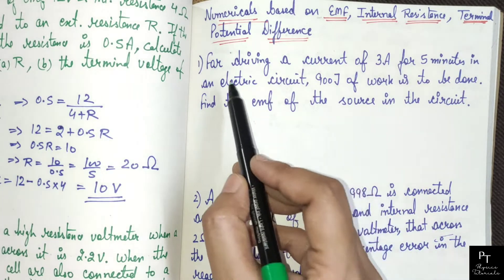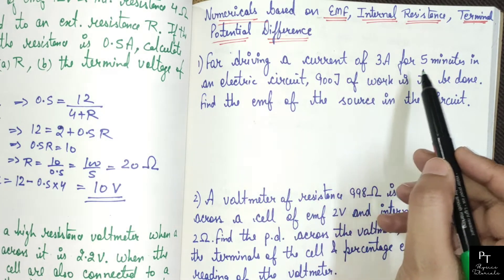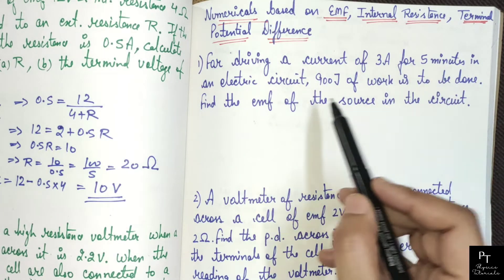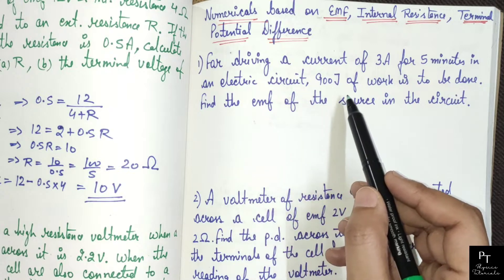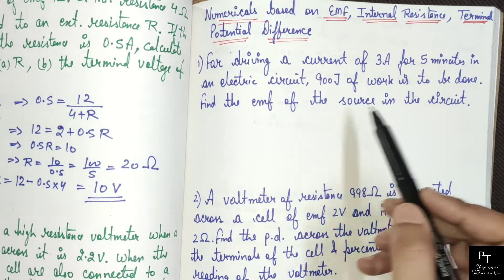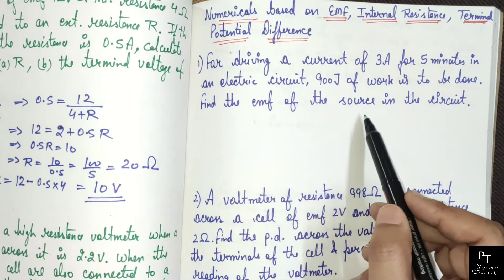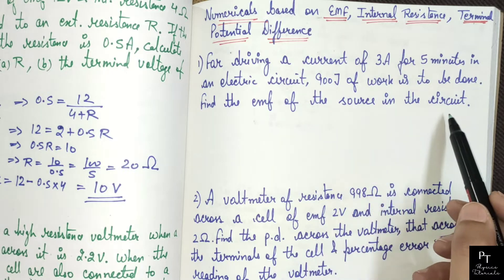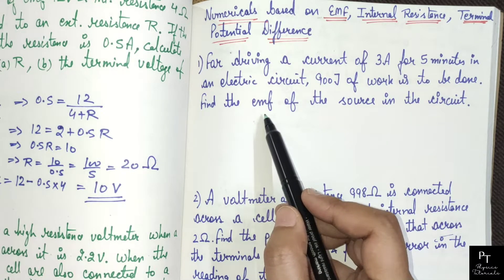It says that for driving a current of 3 ampere for 5 minutes in an electric circuit, 900 joules of work is to be done. Find the EMF of the source in the circuit. So in this question we need to find EMF.